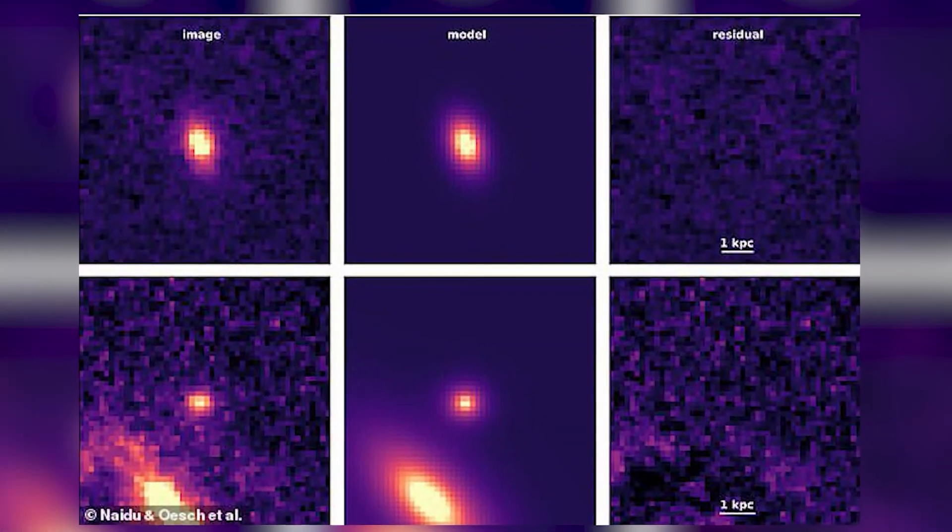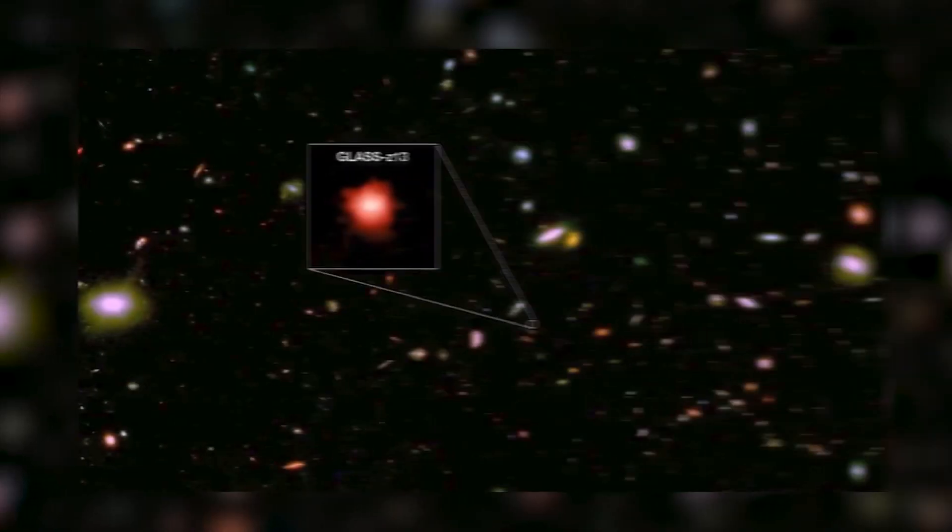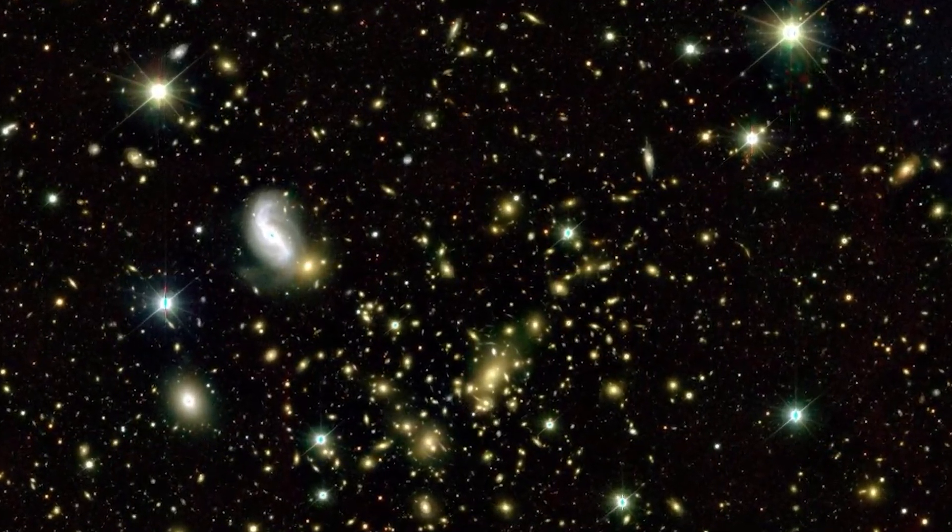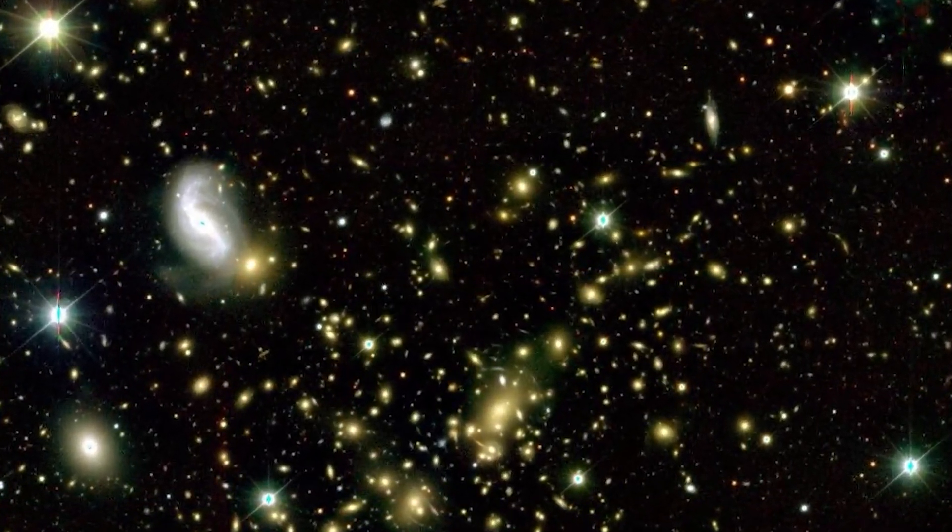It was found in James Webb's NIR cam's infrared to visible translation data. As part of the deep field, it appears like a red glob with a white center.